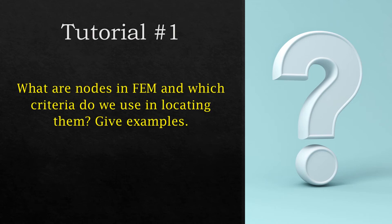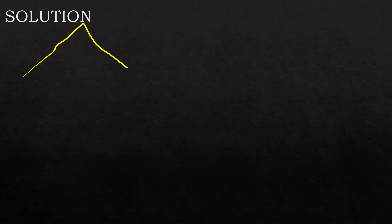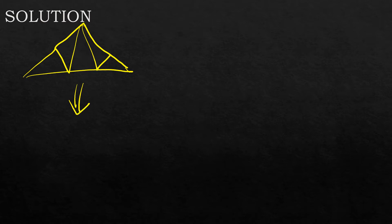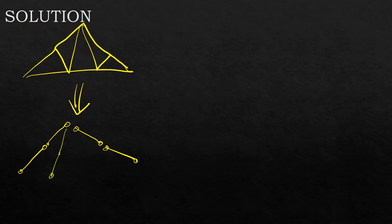In this tutorial we look at what nodes are in finite element methods and which criteria we use in locating them with some examples. The interesting feature of finite element method is discretization — we have a complex scenario, like a truss structure with a number of members, and to analyze it we break it down into different elements, element one, element two, treating them individually. This is what we refer to as discretization.